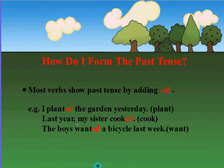Last year my sister cooked. The base verb is cook, so we added -ed to cook to show that it happened in the past. The boys wanted a bicycle last week. The base verb is want, so we added -ed to want to show that it happened in the past.